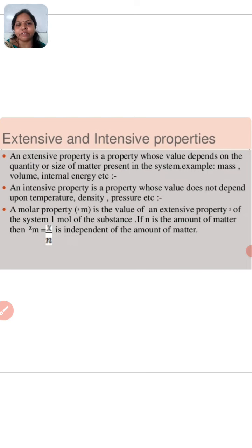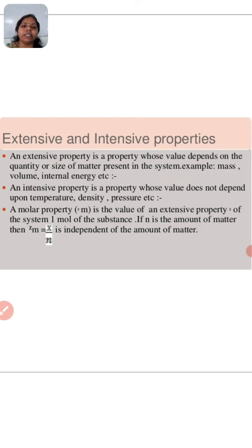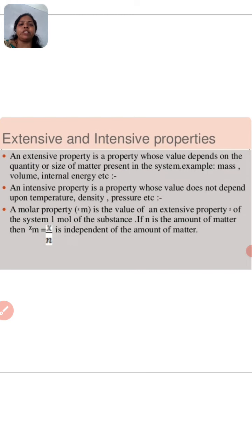Today's topic is extensive and intensive property. An extensive property is a property whose value depends on the quantity or size of the matter present in the system. Examples include mass, volume, and internal energy. Extensive property value depends on quantity or size of the matter in the system.